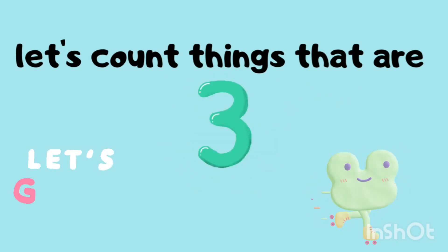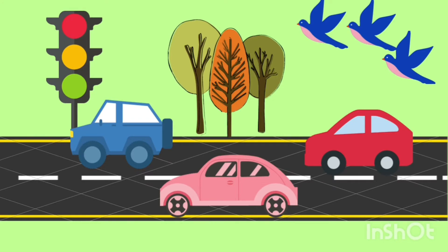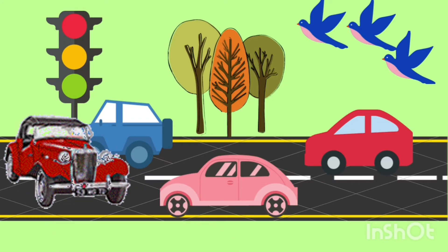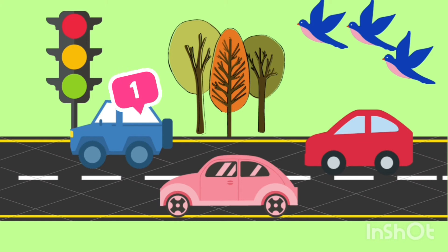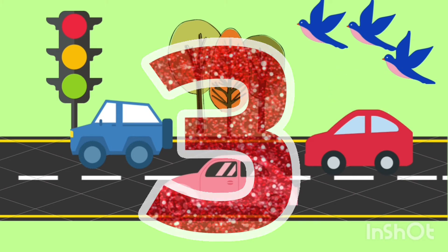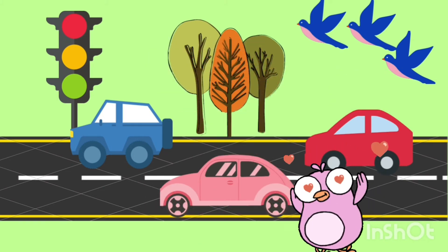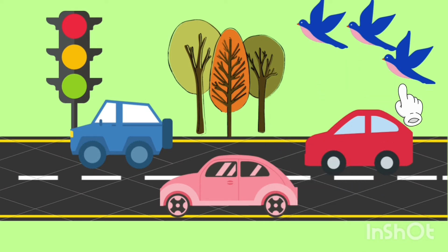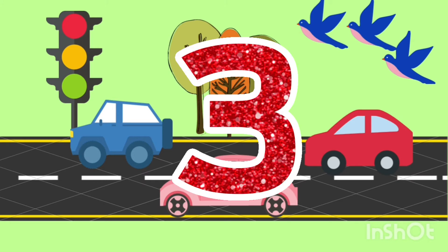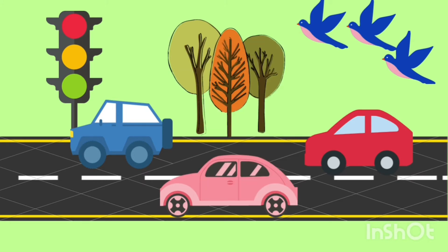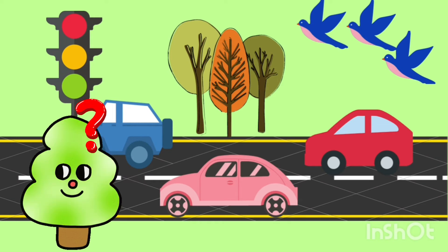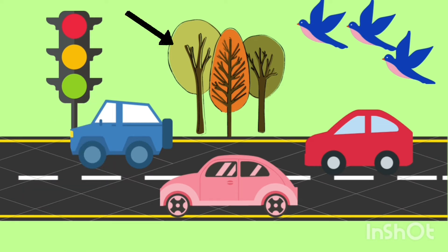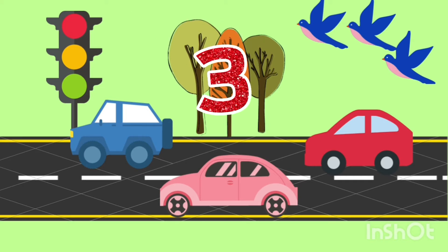Now that we know how number three looks, let's count things that are three. Look at this picture, kids — how many cars do you see? Let's count together: one, two, three. There are three cars. Let's count the birds as well: one, two, three — there are three birds. And I see three trees too.